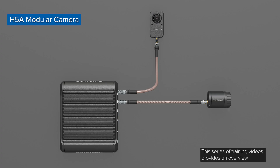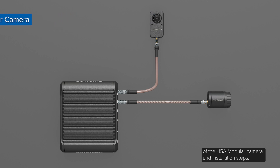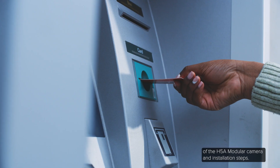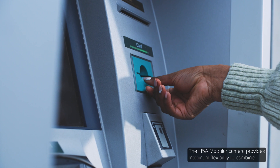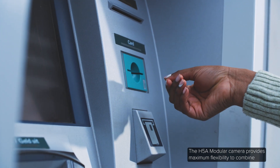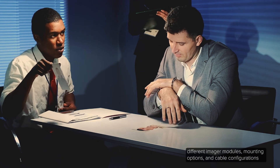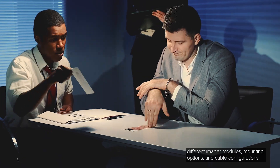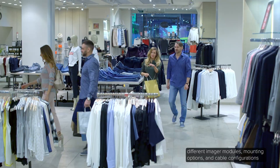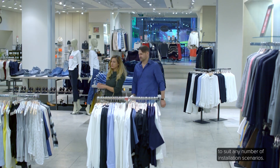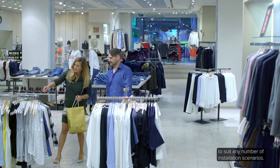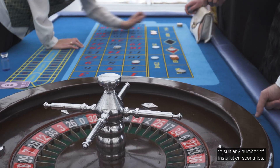This series of training videos provides an overview of the H5A modular camera and installation steps. The H5A modular camera provides maximum flexibility to combine different imager modules, mounting options, and cable configurations to suit any number of installation scenarios.